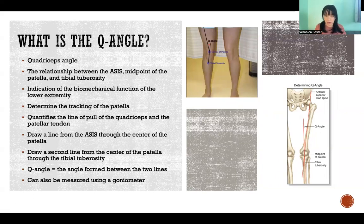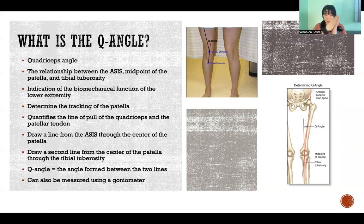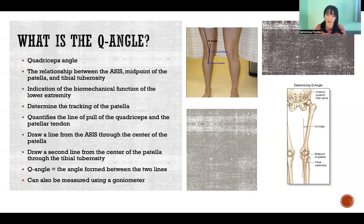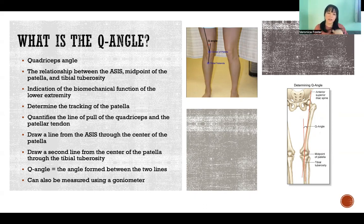The Q angle should be within a certain range, and that tells us that the angle of the quadriceps relative to the patella and the line of pull where the quadriceps insert into the tibial tuberosity is healthy and correct, and that the biomechanical function of the lower extremities is good. It determines the tracking of the patella and is a way to quantify the line of pull of the quadriceps and the patellar tendon.